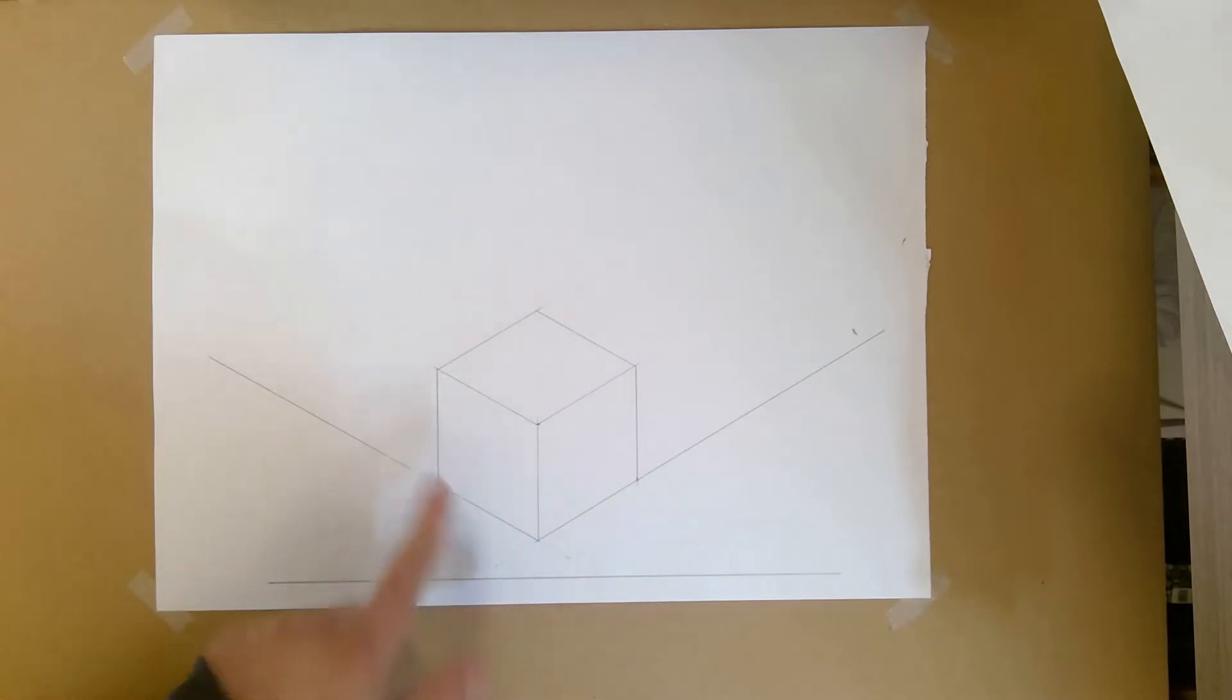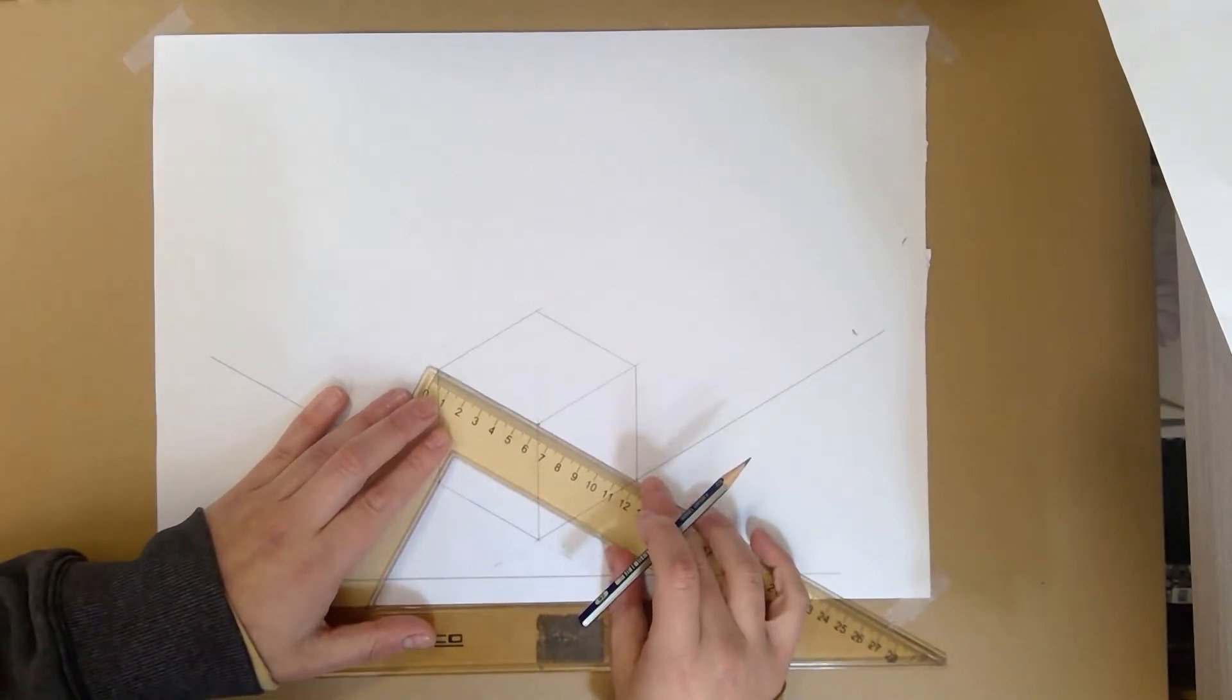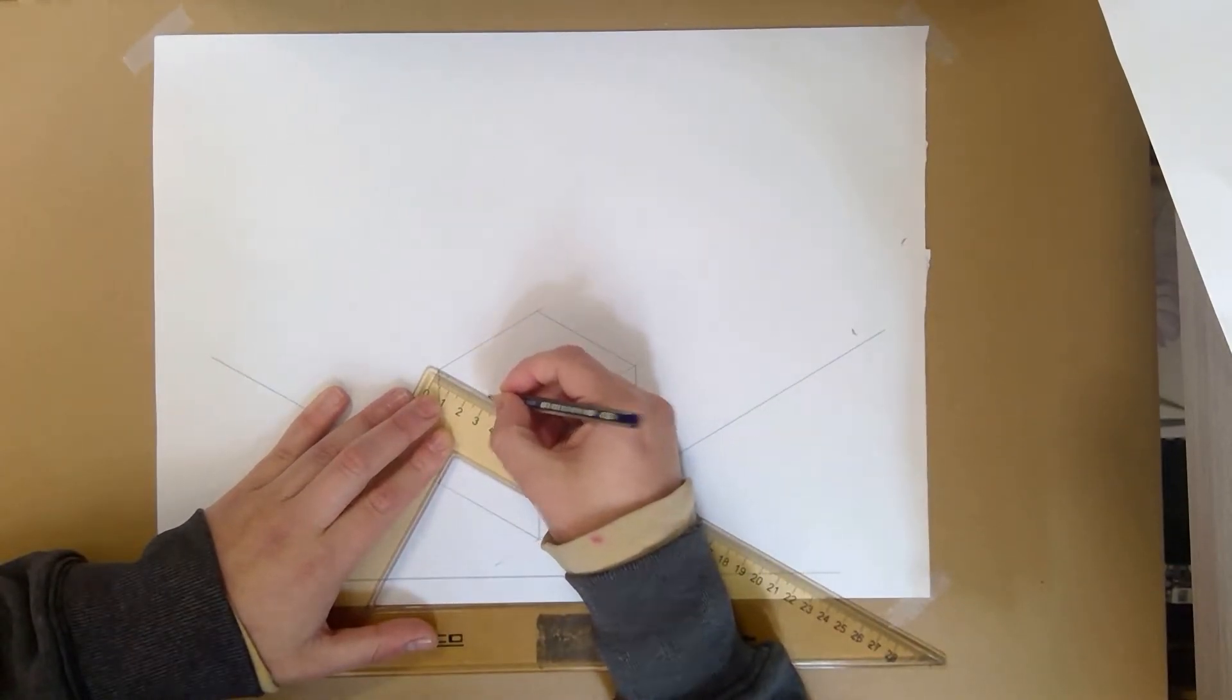So to create a triangular prism like a roof, what we need to do is along this line here, we know it's six centimeters wide. So we're roughly just going to find the halfway point using our ruler. So that's three centimeters like so.